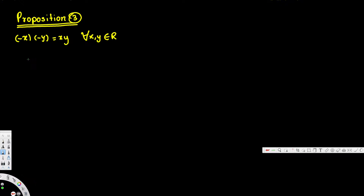First, we are going to use proposition number one. Proposition number one says negative x times zero is equal to zero. Then by additive inverse, we can write this as negative x times (negative y plus y), and that is equal to zero. Here we are using additive inverse.